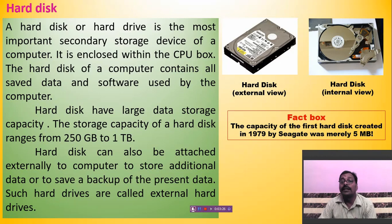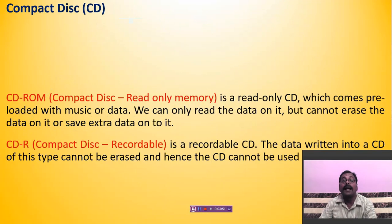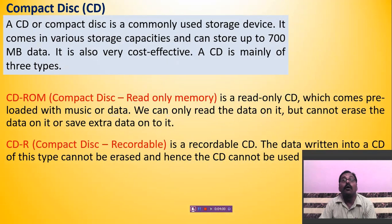That first Seagate hard disk in 1979 had only 5 MB of data storage capacity. Now the next heading is compact disk — this is another storage device of a computer. It is a round-shaped disk and is a commonly used storage device. It comes in various storage capacities and can store up to 700 megabytes of data.